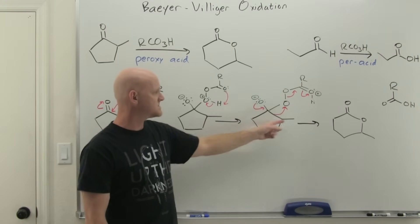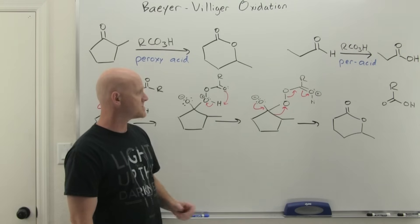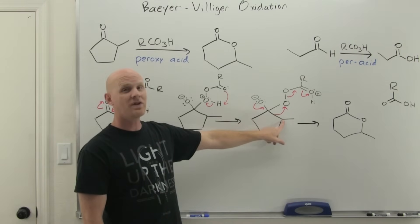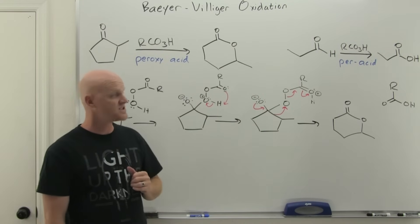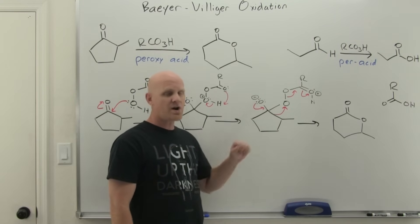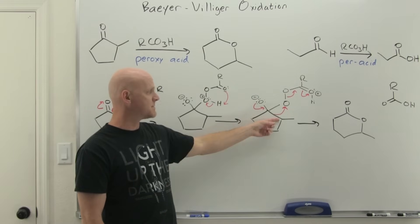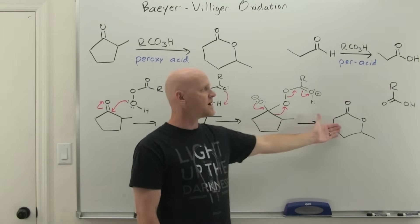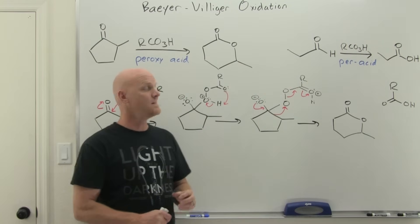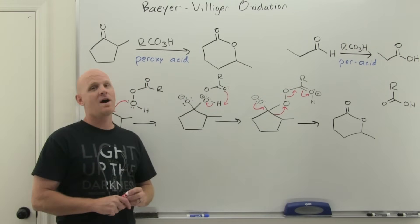In the intermediates, there's partial positive charge buildup on that carbon. Whichever side it inserts on has this partial positive charge buildup, and it's more stable on a more substituted carbon, just like a more substituted carbocation is more stable. There's no actual carbocation intermediate, but in the transition state there is partial positive charge buildup. That's why it inserts on the more substituted side. That's the Bayer-Villiger oxidation.